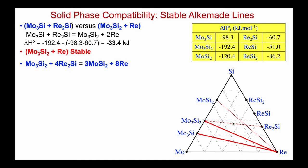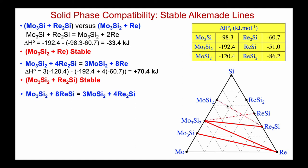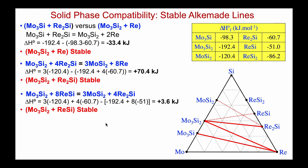Working our way up, we look at the relative stabilities of Mo₃Si₂ and Re₂Si versus MoSi₂ plus Re. The enthalpy is positive, so the left-hand side is more stable. Mo₃Si₂ plus Re₂Si is a stable phase assemblage, and we enter it as a stable Alkemade line. Next we check the following two two-phase possibilities: enthalpy is positive again, left-hand side is stable, so we get rid of the unstable tie line and replace it with the stable one.